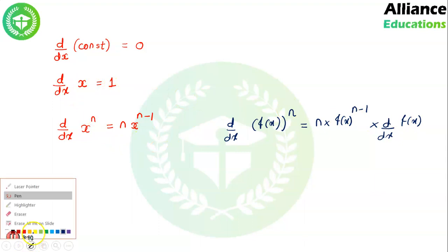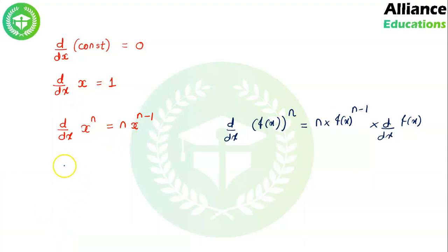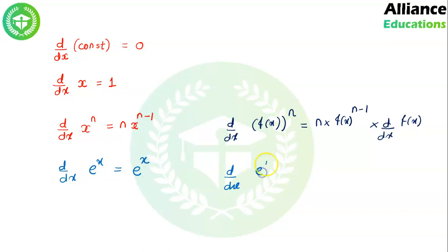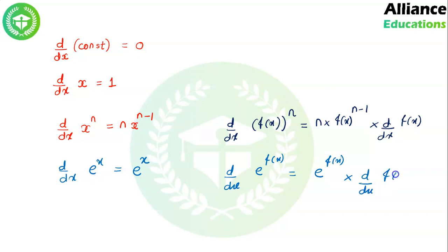After applying the power rule, we need to go inside the function. So we take d/dx of f(x) and keep differentiating until a single x remains, because the derivative of x is 1. Then we know d/dx of e^x is e^x only. So d/dx of e^f(x) — if e has f(x) in the power — the derivative will be e^f(x) itself, then multiplied by d/dx of f(x), going inside the function.